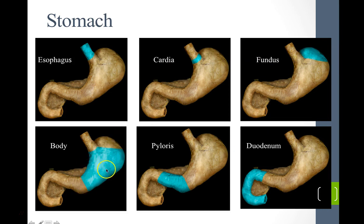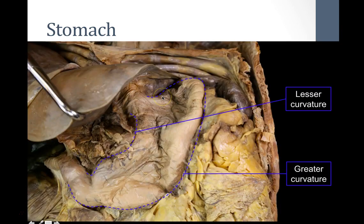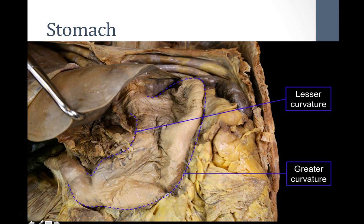Images from APR show the esophagus, cardiac opening, dome-shaped fundus, body, and pylorus of the stomach. The greater curvature on the left side is the attachment for the greater omentum, and the lesser curvature on the right is the attachment for the lesser omentum. A cut through the pylorus shows the pyloric sphincter clearly. The liver is visible in relation to the stomach in the left upper quadrant.